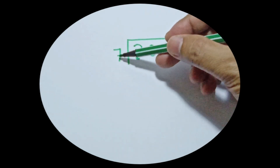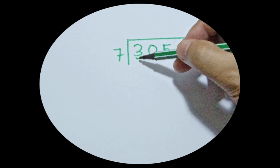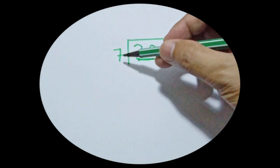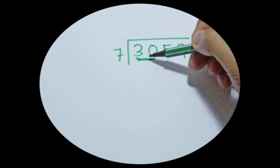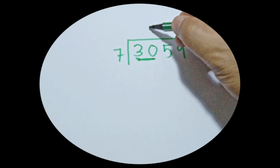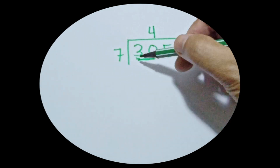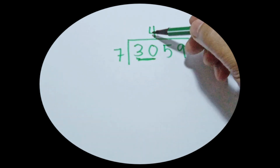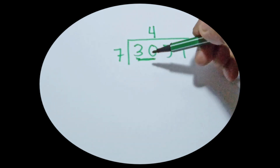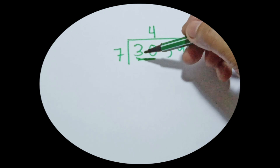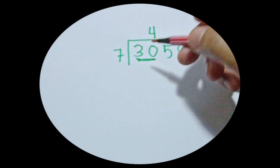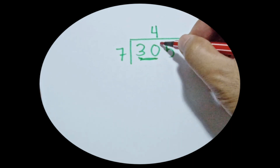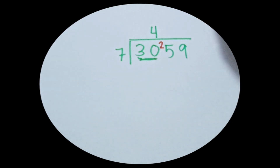We make 7 out of 3, so we take the two digits. How many 7s can you make from 30? We can make 4 sevens, so the answer is 4. 4 times 7 is 28, and 30 minus 28 is 2, so we put 2 there.